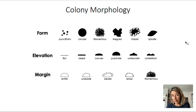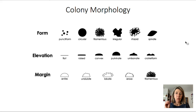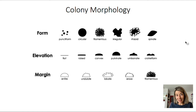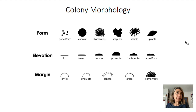For colony form, it can be punctiform (tiny dots), circular, filamentous (all filaments), or rhizoid (a more solid center with filaments radiating out), or irregular spindle shapes. Elevation describes how the colony rises from the surface — when looking at colonies in real life you look slightly sideways at the plate. Some have interesting shapes like umbonate or crateriform, but the majority of colonies in a normal lab are either raised or convex.